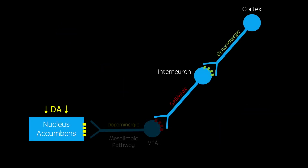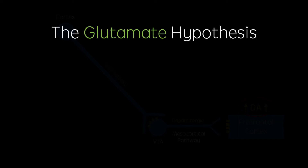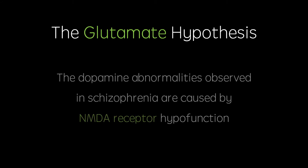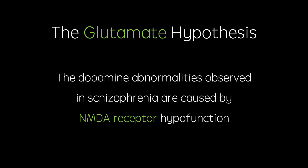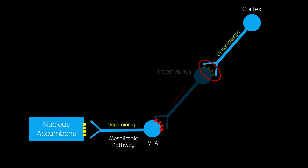But what is it that causes this firing to increase in the mesolimbic pathway and decrease in the mesocortical pathway? The answer lies in the glutamate hypothesis. This states that the dopamine abnormalities observed in schizophrenia are caused by NMDA receptor hypofunction. If the NMDA glutamate receptors are reduced, inhibitory interneurons can no longer inhibit the firing of dopaminergic neurons in the mesolimbic pathway, which becomes disinhibited, leading to the dopamine hyperactivity as described in the dopamine hypothesis.